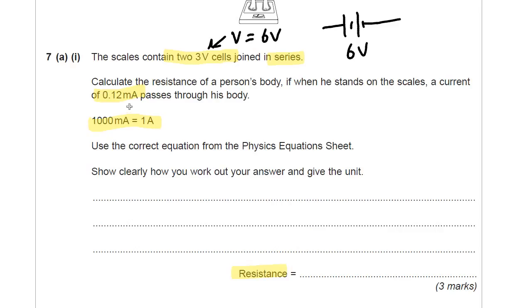This is the current here. 0.12 milliamps. But you don't want it in milliamps. So you need to actually change that into amps. And the way to do that is to divide it by 1,000. Because there's 1,000 milliamps in 1 amp, if I do 0.12 divided by 1,000, then I get 0.00012 amps. A tricky thing to do.